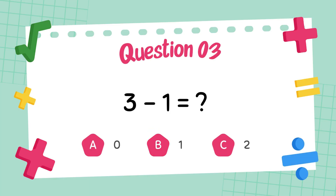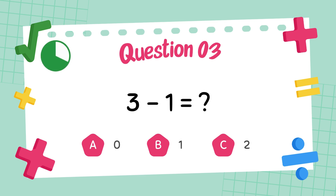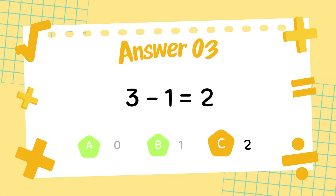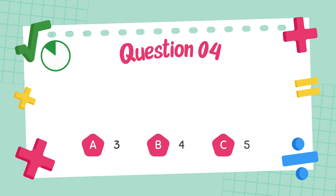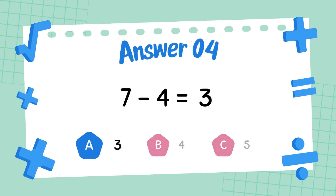What is 3 minus 1? The answer is 2. What is 7 minus 4? The answer is 3.